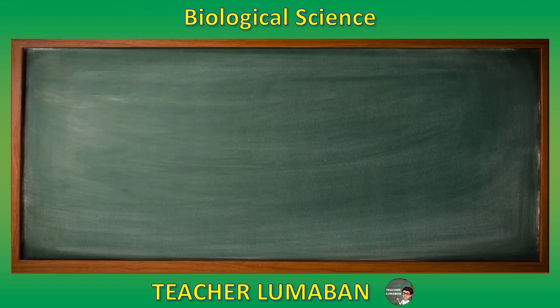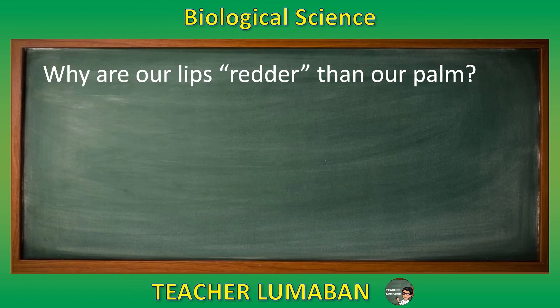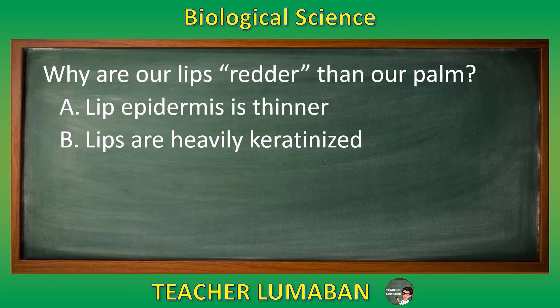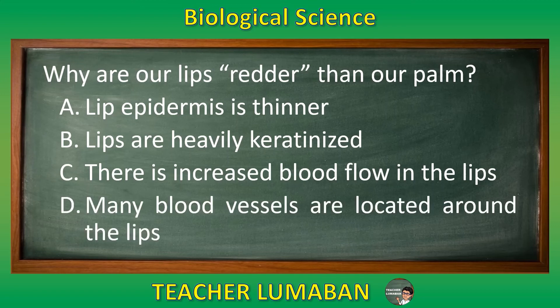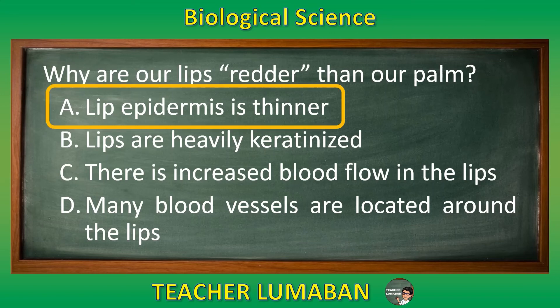Why are our lips redder than our palm? Letter A: Lip epidermis is thinner. Letter B: Lips are heavily keratinized. Letter C: There is increased blood flow in the lips. Letter D: Many blood vessels are located around the lips. The correct answer is letter A — lip epidermis is thinner. Our lips are redder than our palm because the lip epidermis is thinner.